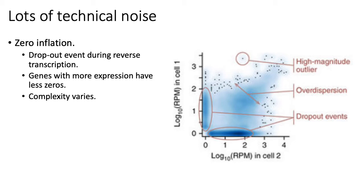In an ideal situation, this plot would actually be diagonal. Each point in this plot represents a single gene, and ideally you'd see a line on the diagonal, which means that you get the same abundance measured in each of your two replicates. But in practice, you see this cloud, which means that there's a lot of technical noise in these measurements. Furthermore, you can actually see two bands on the axis — one on the x-axis and one on the y-axis.